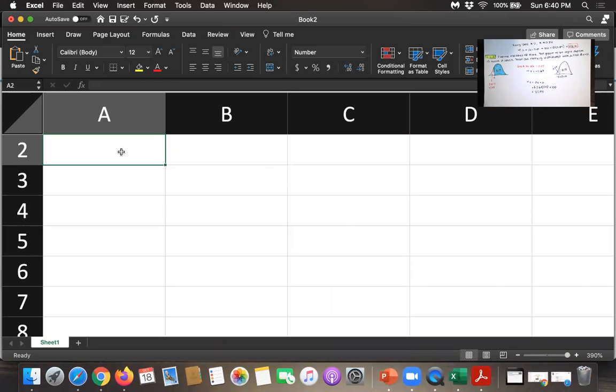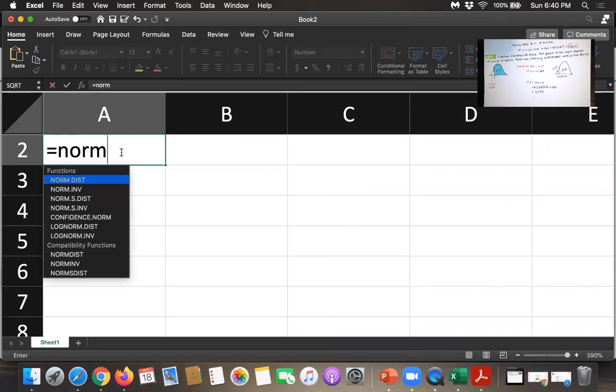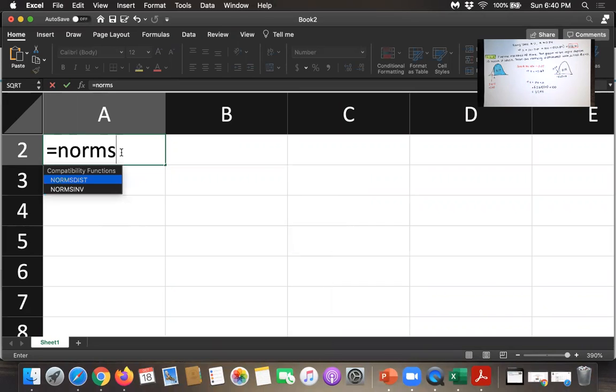Now remember, if you have an area and you want to get a z-score, you have to type equals and then NORM.S (so that's standard normal distribution) .INV (INV is for inverse). Open parentheses, and it tells you what you're supposed to put in the parentheses. It says the probability right there. That's the same as the area to the left.